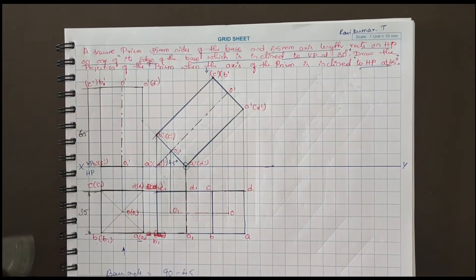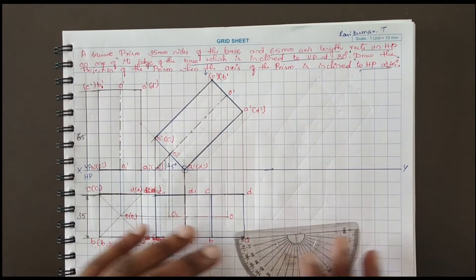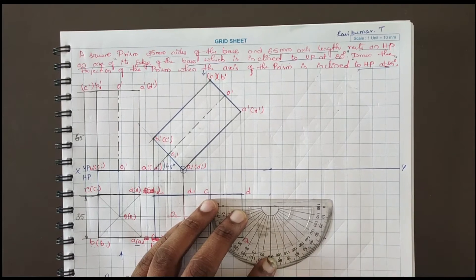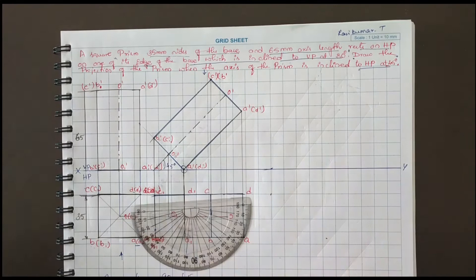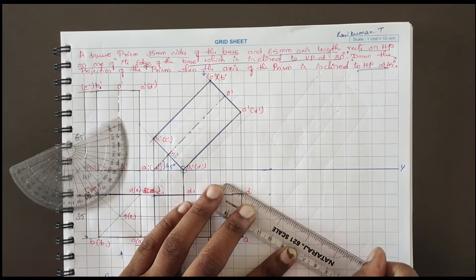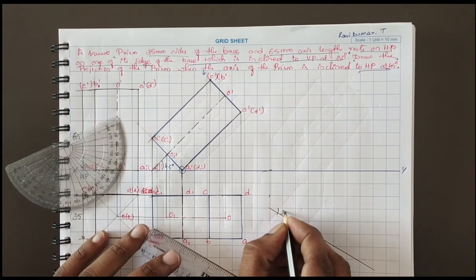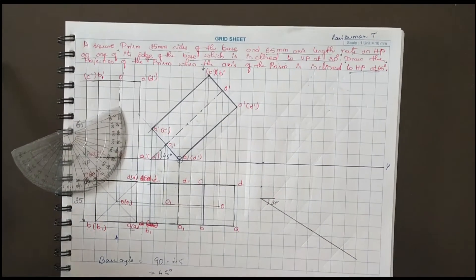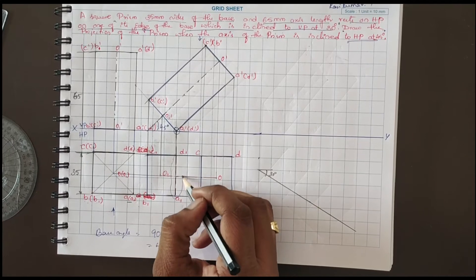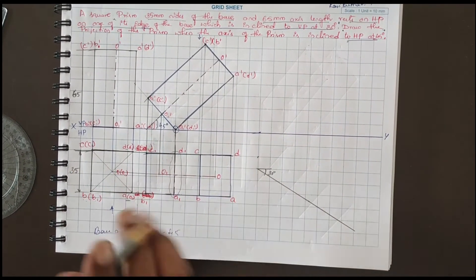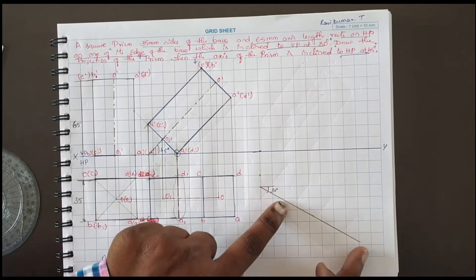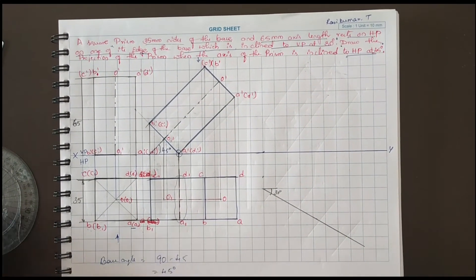This is the second position. For the third position — very important — they have given VP 30 degrees. Draw the 30 degree line. This is inclined to VP at 30 degrees. Here is a very important thing: almost all students make a mistake here. Instead of taking the resting edge inclined to VP, they take the axis — that is wrong. Because they have given: one of its edges of the base is inclined to VP at 30 degrees. So you have to take this edge and place it on the inclined-to-VP line.